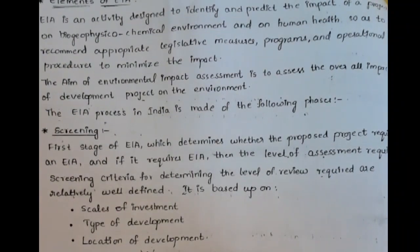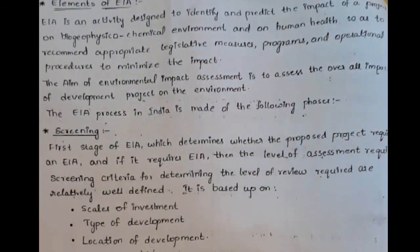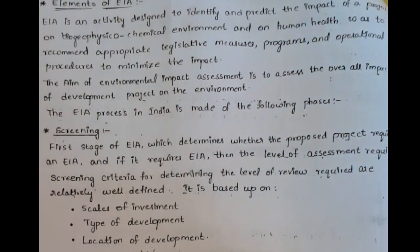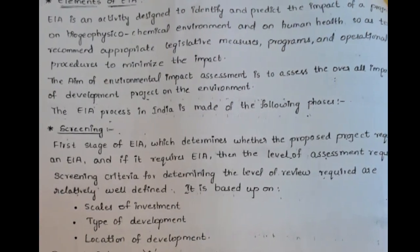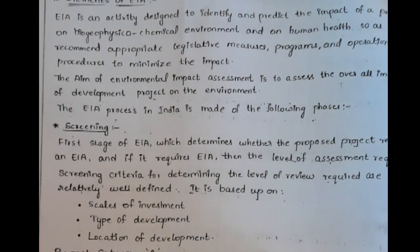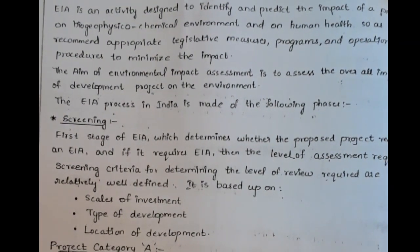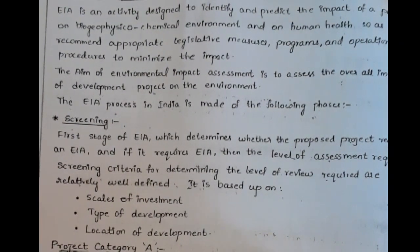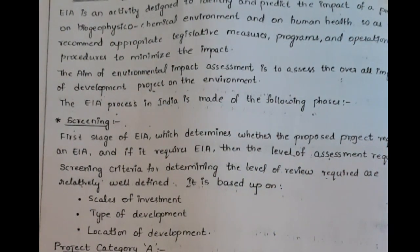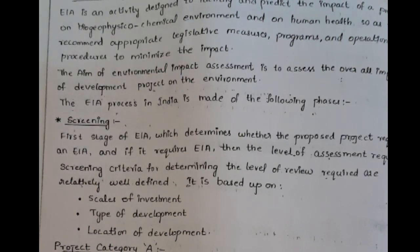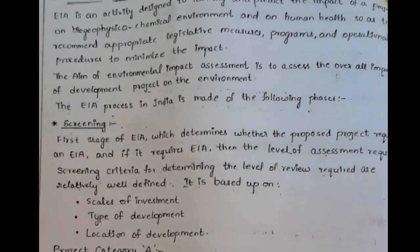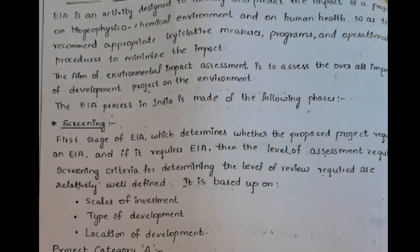Projects in category A basically require an EIA, which is necessary. The potentially significant environmental issues for this project may lead to change in land use, as well as changes to social, physical, and biological environment. Because of this project, the environmental issues will change in land use as well as the physical and biological environment.